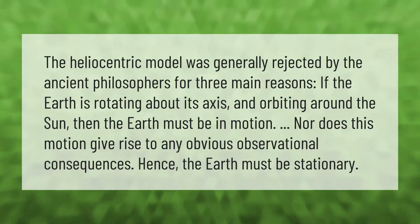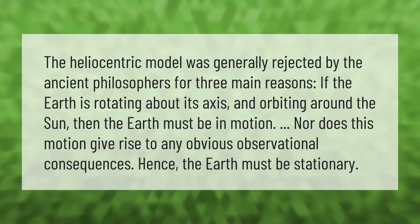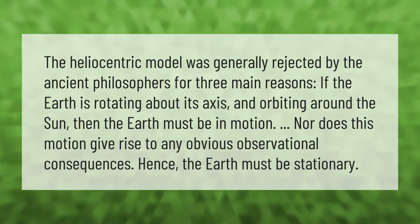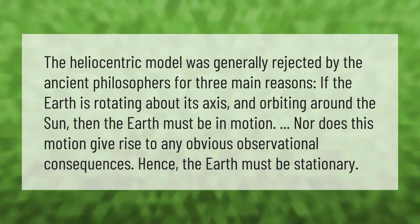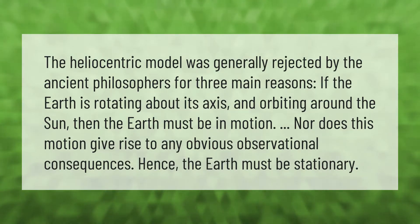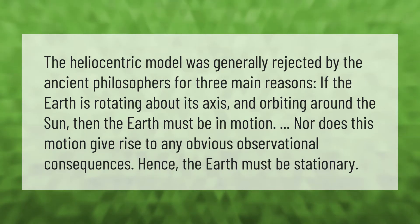The heliocentric model was generally rejected by the ancient philosophers for three main reasons. If the earth is rotating about its axis and orbiting around the sun, then the earth must be in motion. Nor does this motion give rise to any obvious observational consequences — hence the earth must be stationary.